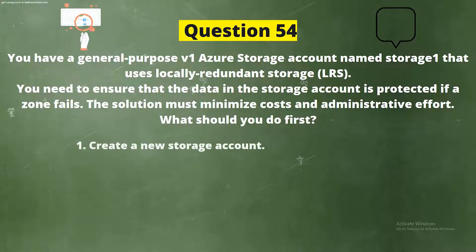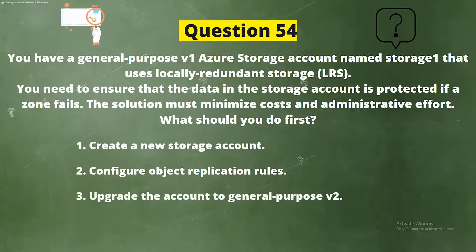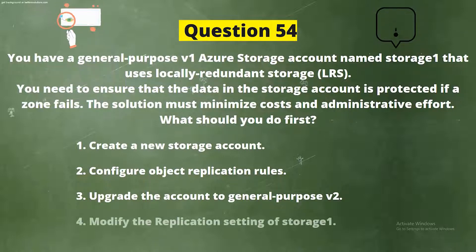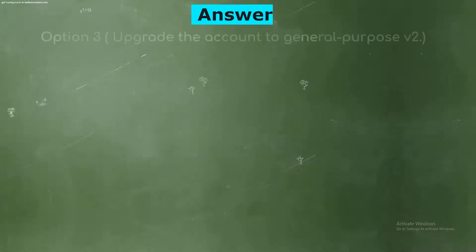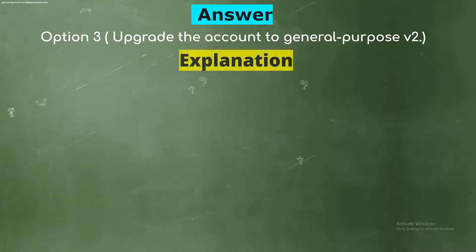The options are: Option 1, create a new storage account; Option 2, configure object replication rules; Option 3, upgrade the account to general purpose V2; Option 4, modify the replication setting of Storage1. The correct answer is Option 3: upgrade the account to general purpose V2.